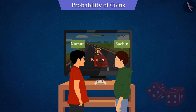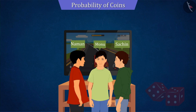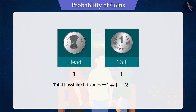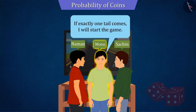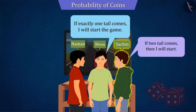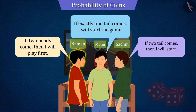Sachin and Naman were discussing that, when their friend Monu arrives and also wants to play video games. Due to which the same problem arises: who will start the game first? Since only two results are obtained from a coin, this time they think of making decisions by tossing two coins. Monu says that if exactly one tail comes, he will start the game. Sachin says that if two tails come, then he will start. While Naman says if two heads come, then he will play first.